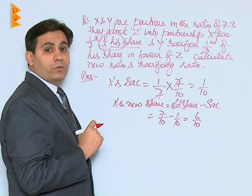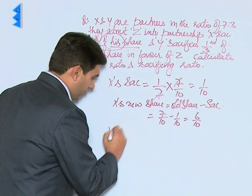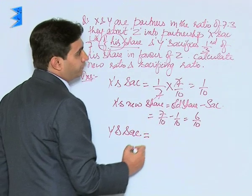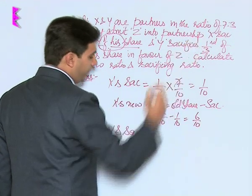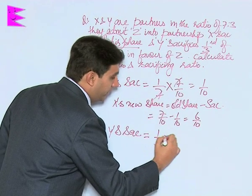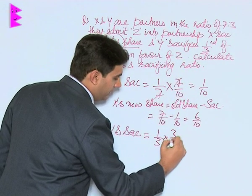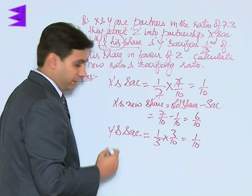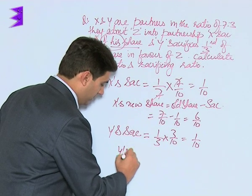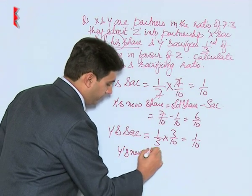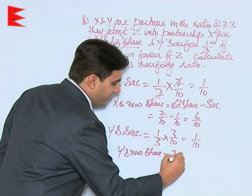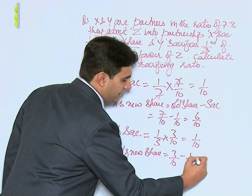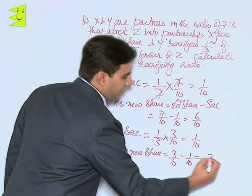In similar manner, we can calculate Y's sacrifice. Y's sacrifice is equal to 1/3rd of his share: 1/3 × 3/10 = 1/10. So Y's new share would be old share of Y, which is 3/10, minus sacrifice of Y, which is 1/10, giving us 2/10.